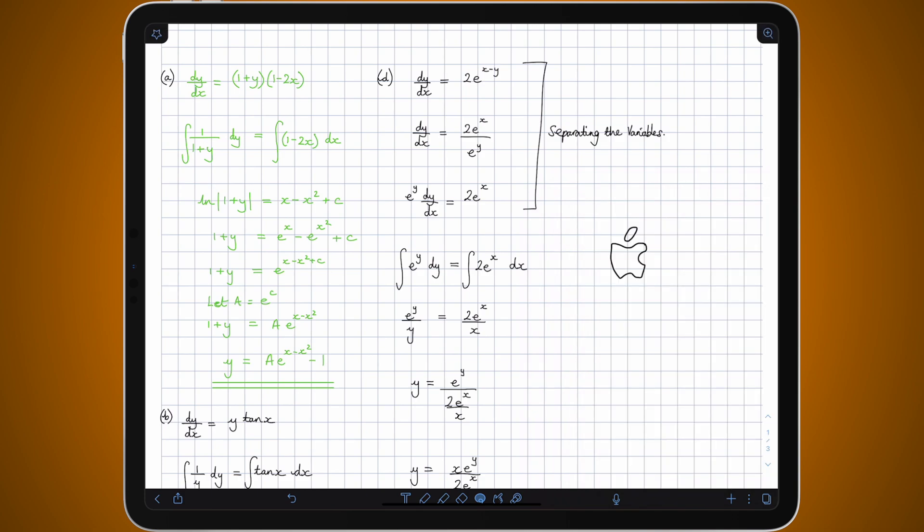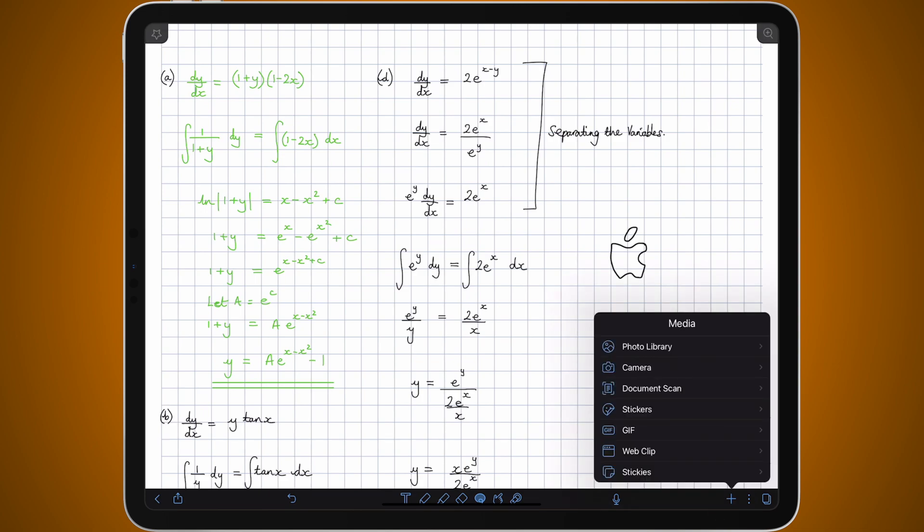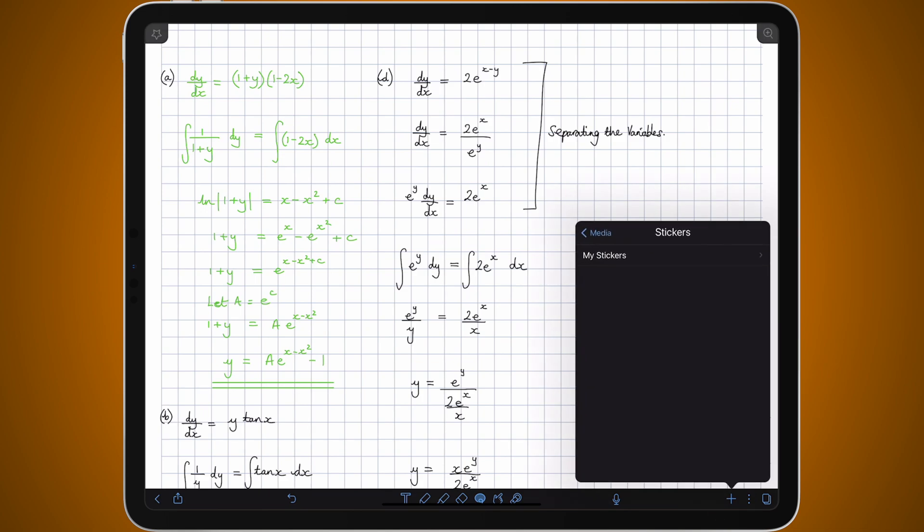And if I want to use this sticker all I have to do is tap on the plus in the bottom right hand corner and go to where it says stickers and tap on my stickers, and you'll see all the different stickers you've created.